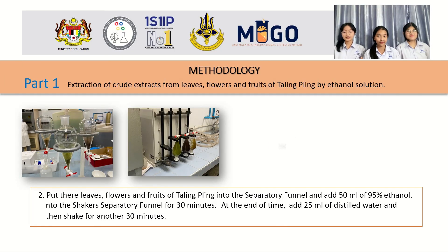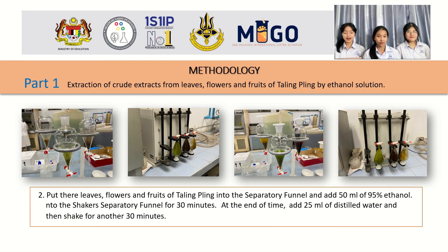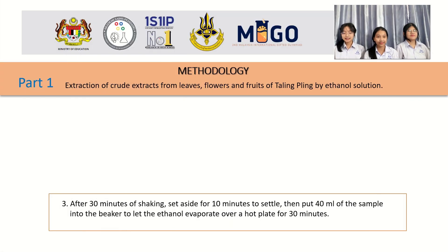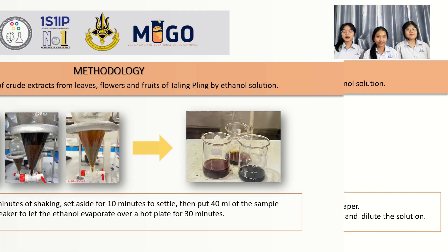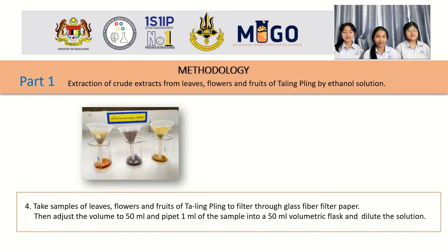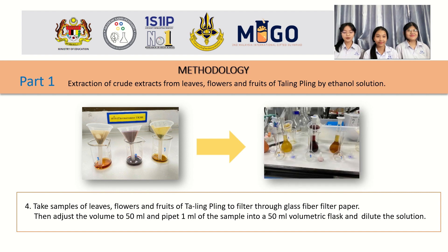Step 2: add 50 ml of 95% ethanol into the conical flasks, then infuse in the shaker for 30 minutes. Step 3: leave the sample for 10 minutes and pull 40 ml of the sample into the beaker to evaporate the ethanol with heat for 30 minutes. Step 4: take the sample to filter with glass fiber filter paper. When filtering is complete, extract the volume to 50 ml and prepare the sample — 1 ml was placed in a 50 ml volumetric flask and dilute the solution.